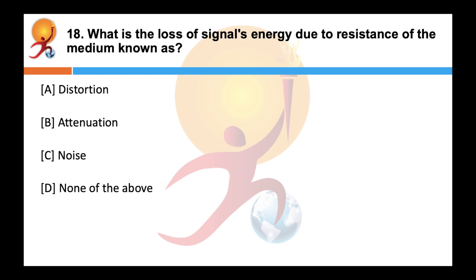What is the loss of signal energy due to resistance of the medium known as? Correct answer is attenuation. It is a loss of signal energy due to resistance of the medium. It is not the same as distortion, which is the alteration of signal due to different propagation speeds.